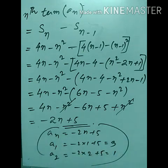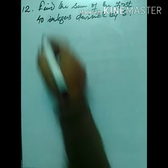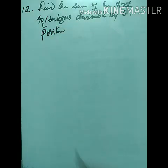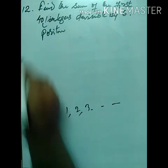Question 12: Find the sum of the first 40 positive integers divisible by 6. Positive integers start from 1, 2, and so on — we don't consider negatives or zero.